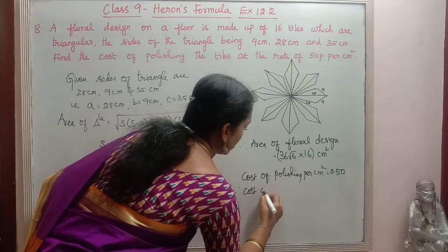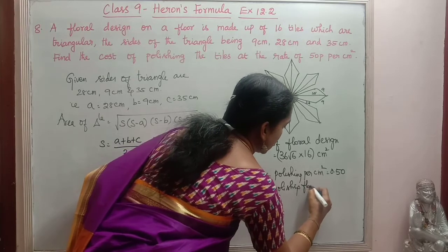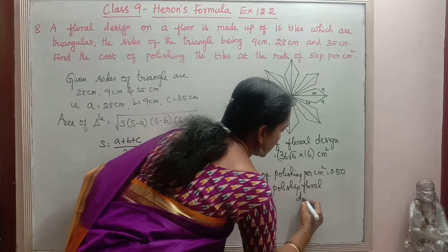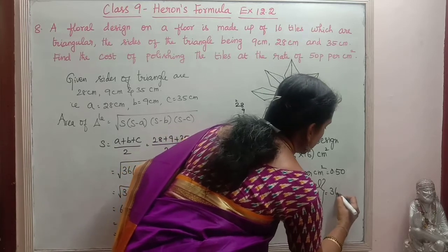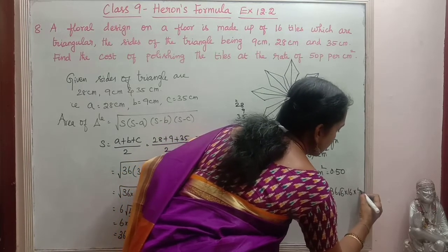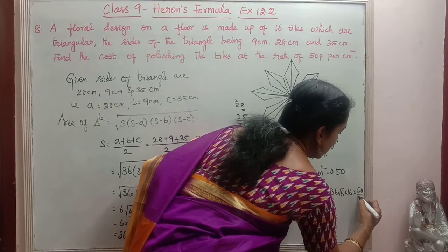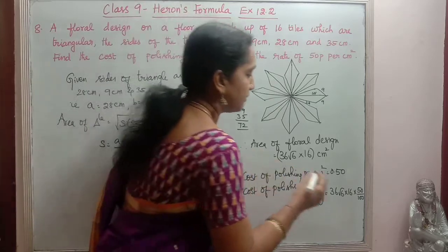Then therefore, cost of polishing floral design is equal to 36 root 6 into 16 into, I am writing this as 50 by 100, 50 by 100. So that is 50 by 100.